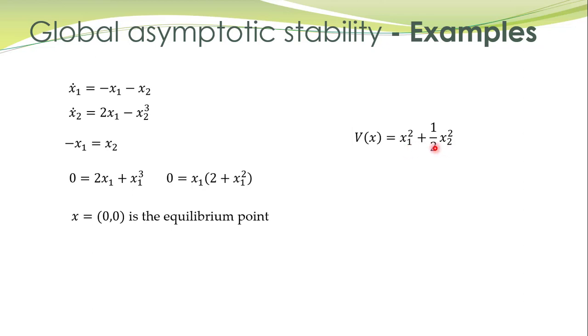We compute the derivative of this function along system trajectories, and then substitute x1 dot and x2 dot from these equations to get this expression. After some simplifications, V dot is given by this expression.